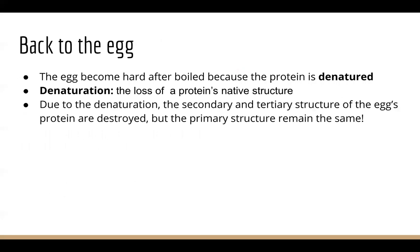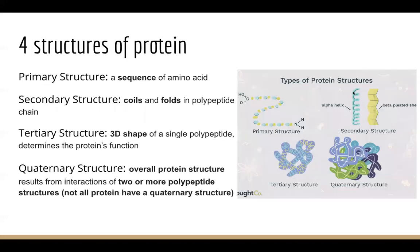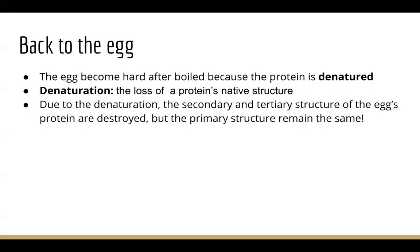Now, back to the egg problem. The reason why the egg became hard after we boiled it is because the protein in the egg is denatured. What we mean by denaturation is that the protein has lost its native structure. Due to this denaturation, the secondary structure and tertiary structure of the egg's protein are destroyed — the coils and folds of the protein and the 3D shape of the protein are both destroyed — and this caused the egg to become hard. However, the primary structure of the egg remained the same, meaning that the sequence of amino acids stays the same after we boil it.